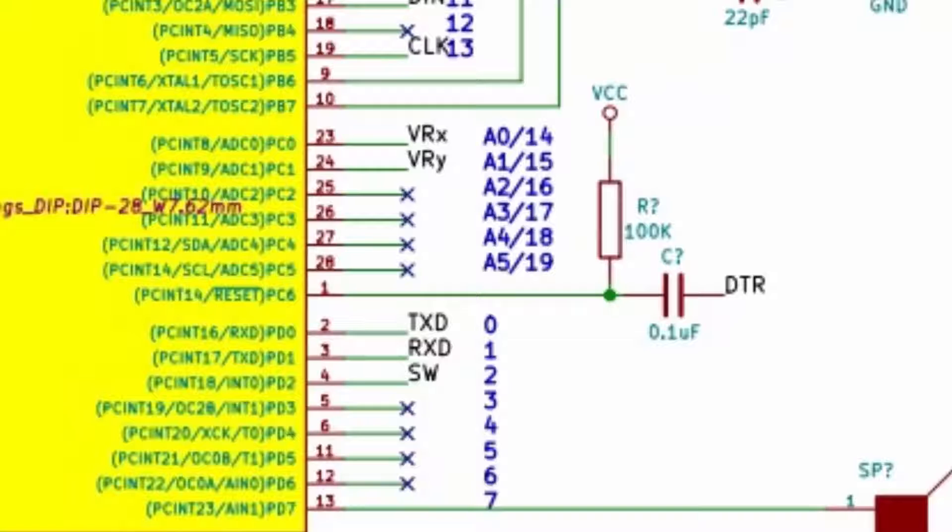The analog pins A0 and A1 are connected to X and Y axis outputs of the joystick. The values of the joystick vary from 0 to 1024 when moved along the axis. The joystick will be at home with X and Y values of 512.